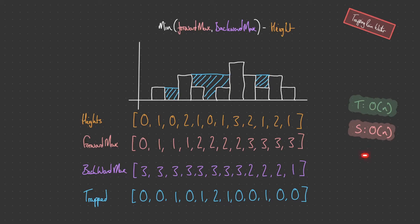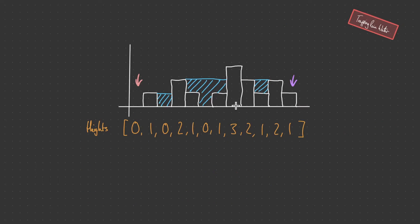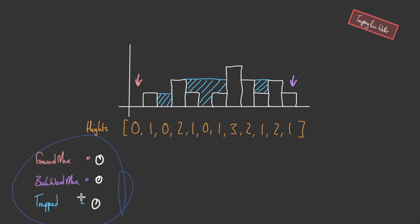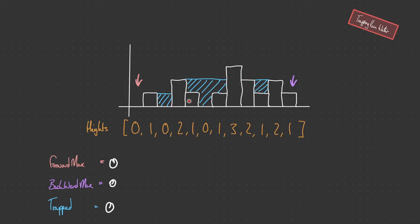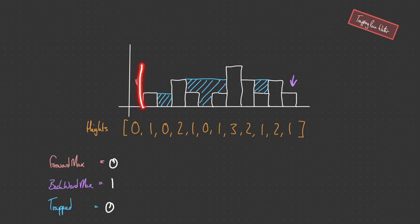Now we need to optimize this and bring space down to constant O(1). We need a solution that removes the forward max and backward max arrays, and the way we're going to do that is with two pointers. Instead of arrays, left max and right max become just integer values. The idea is: we have two pointers, left and right. As long as left is less than right and we have a maximum to the left, we can store water there. Similarly, if backward max is less than the current right value, we know there's a block on that side greater than where we currently are.